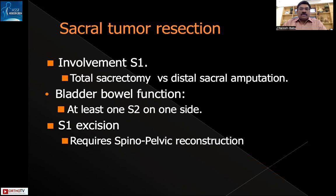The key issue with this case is its involvement of the S1 segment. If involvement is below S3, a distal sacrectomy can be done where the lower sacral parts are dissected and removed while retaining S1. However, if S1 is involved, a total sacrectomy is required. To preserve bowel and bladder function, at least one S2 segment on one side must be spared — one intact S2 sacral nerve root can maintain competent bladder and bowel function.